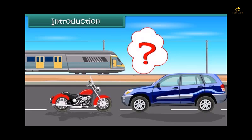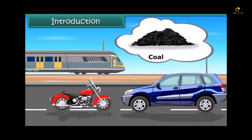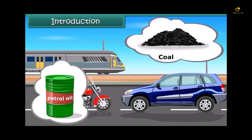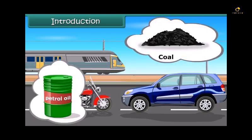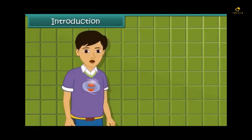They get their energy from fuel. The fuel can either be coal or a petroleum product. They provide energy for vehicles to move. In this module, we are going to learn more about these natural energy resources.